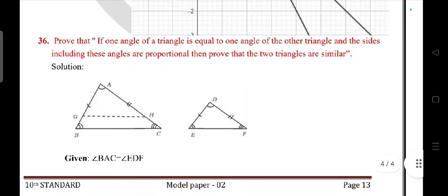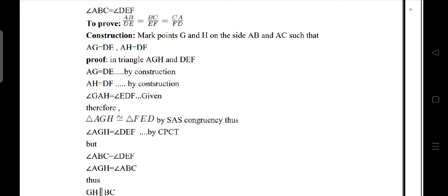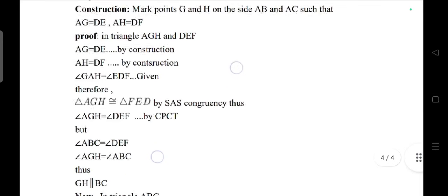Triangle: Prove that if one angle of a triangle is equal to one angle of the other triangle and the sides including these angles are proportional, then prove that the two triangles are similar. This is a theorem: data to prove, construction, and proof.